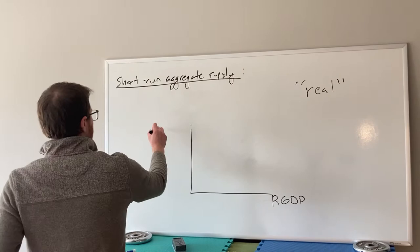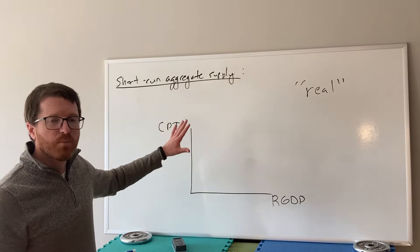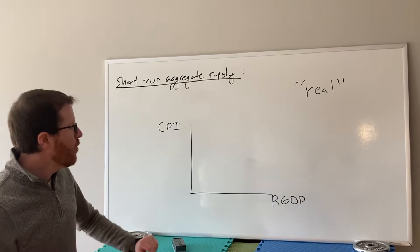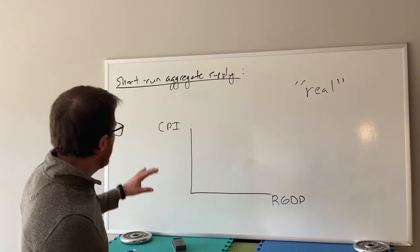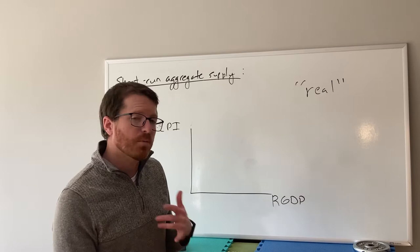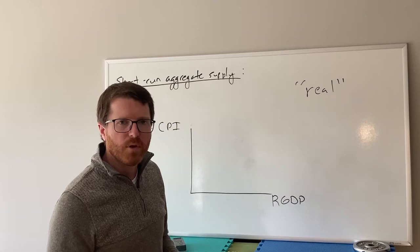Instead of price on the vertical axis, we're going to put CPI — Consumer Price Index. CPI is a measure of prices; generally speaking, prices go up over time, and CPI will go up when there's inflation. So instead of thinking of price and quantity for a good, we're thinking about the prices of everything and the production of everything. In terms of our components in this graph, they're going to have different relationships than they did in the previous supply and demand example. Despite those differences, you're still going to see a similar-looking graph, which is kind of convenient.